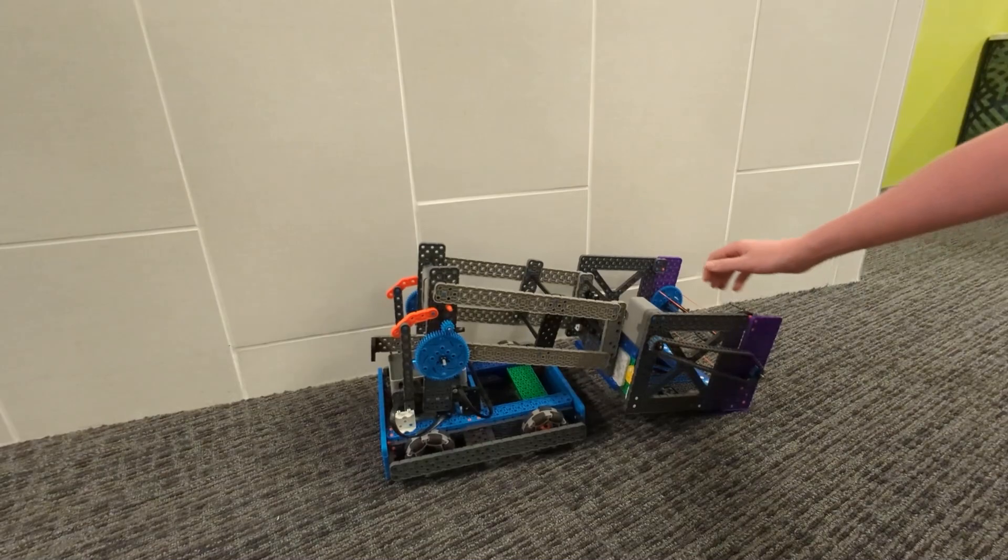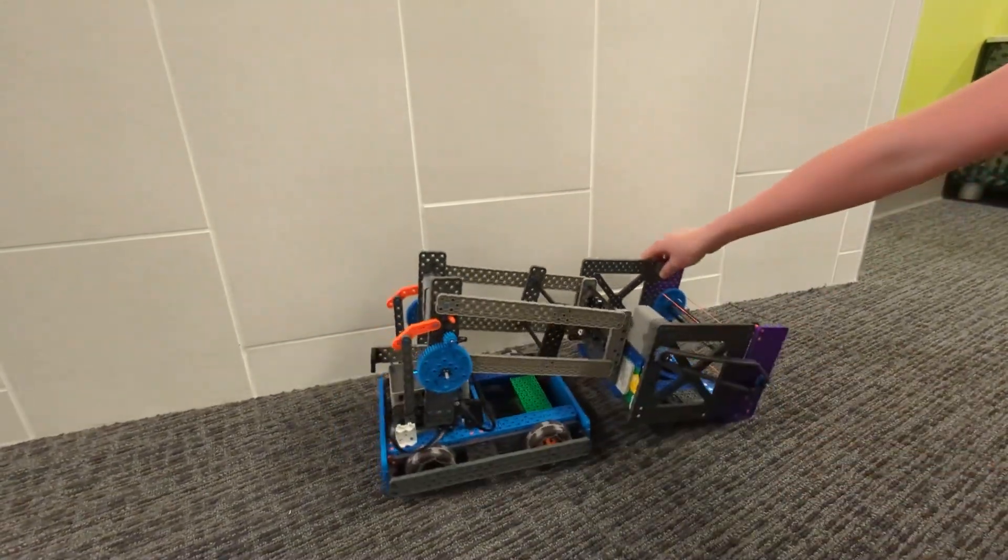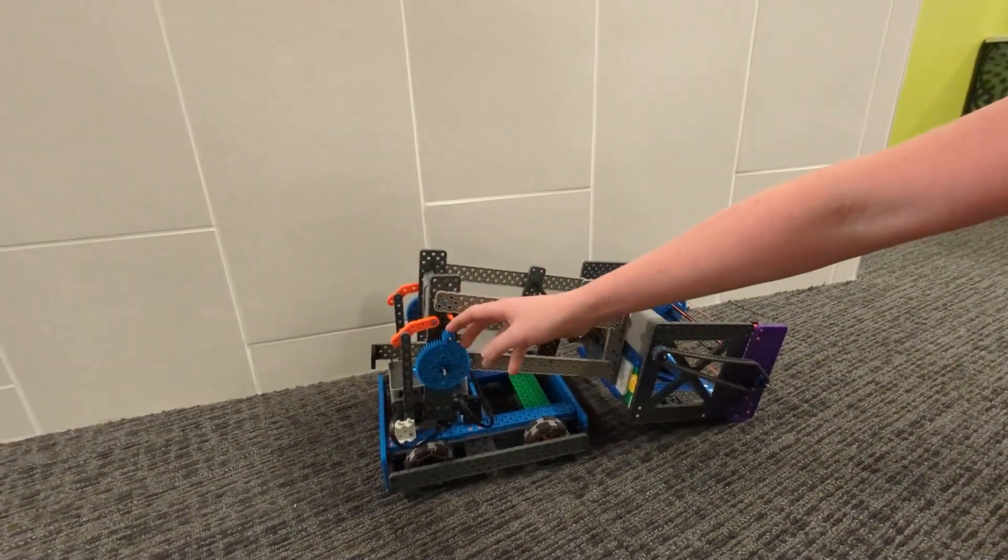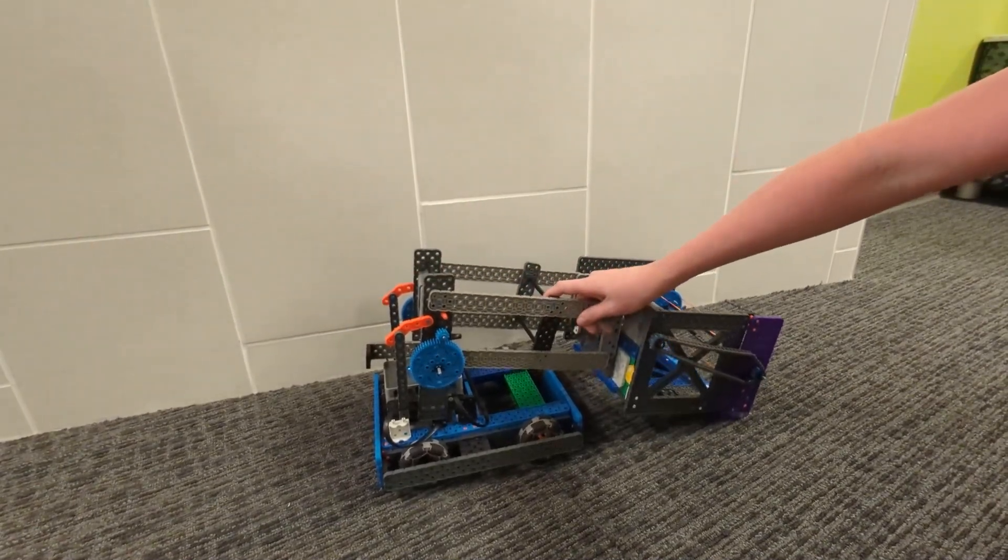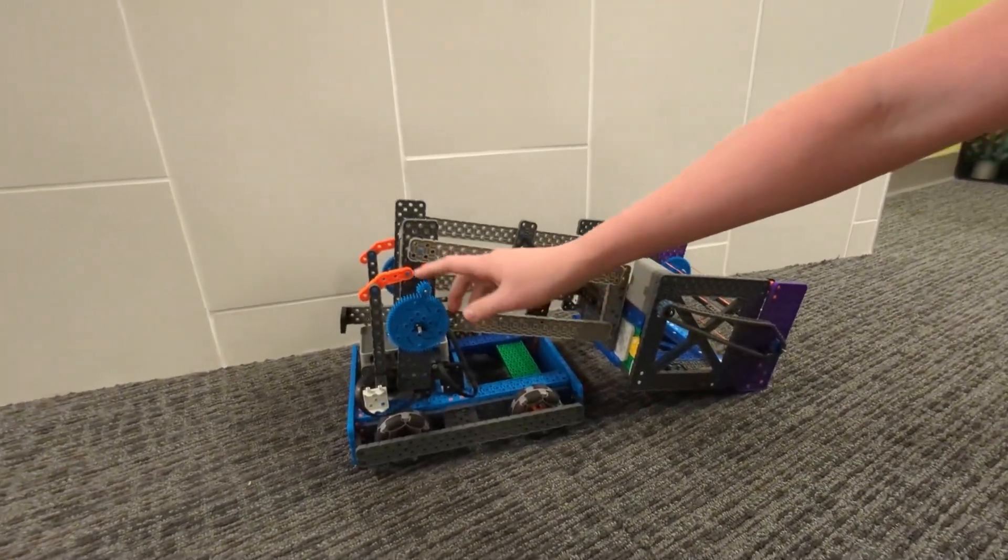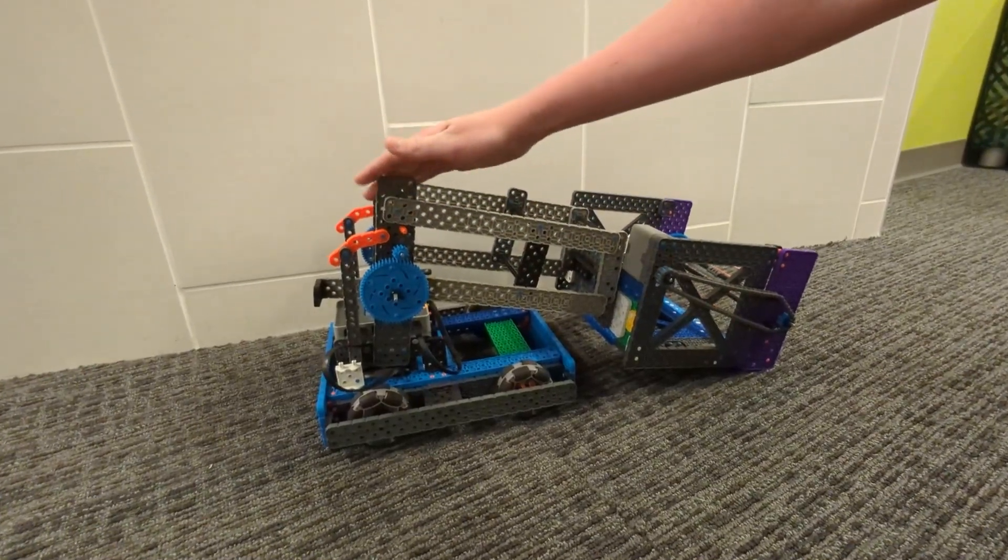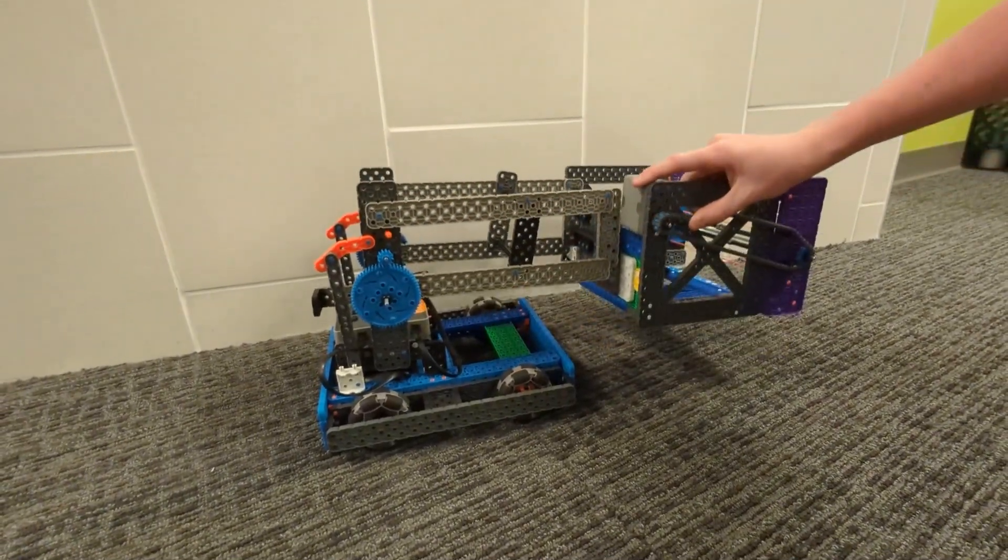As you can see when they're trying to lift this carriage here, their entire structure that holds it is kind of bending forward and it's not allowing it to lift. Right now they've got enough power to do it, but it's just bending forward so much that it isn't allowing it to do it.